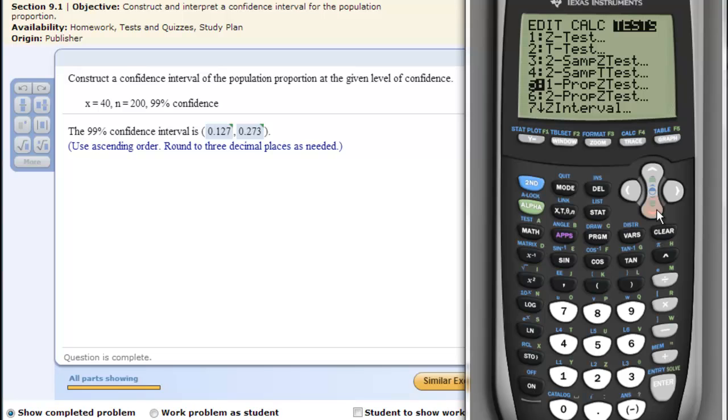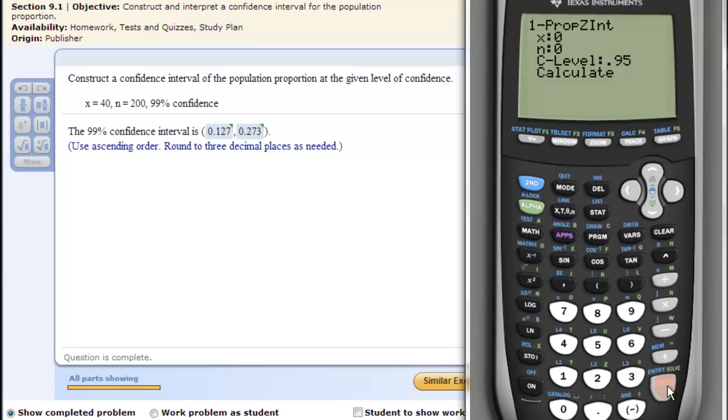And then we'll go down all the way down to the letter A, basically down here where it says 1-PROPZINT. Click the enter. And this allows us to do our proportion confidence intervals.